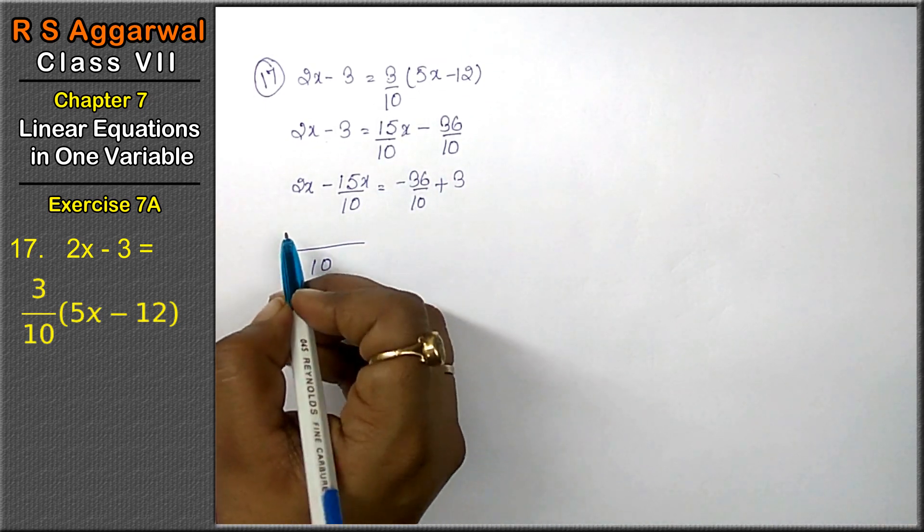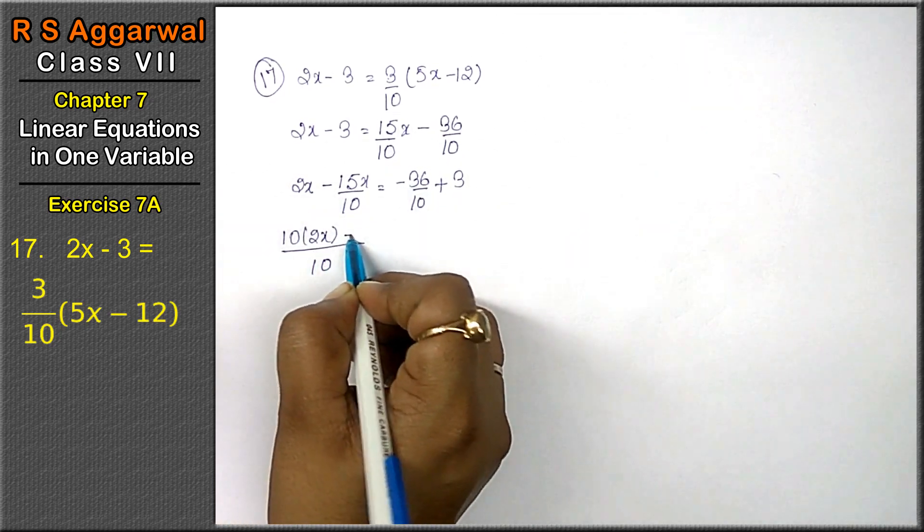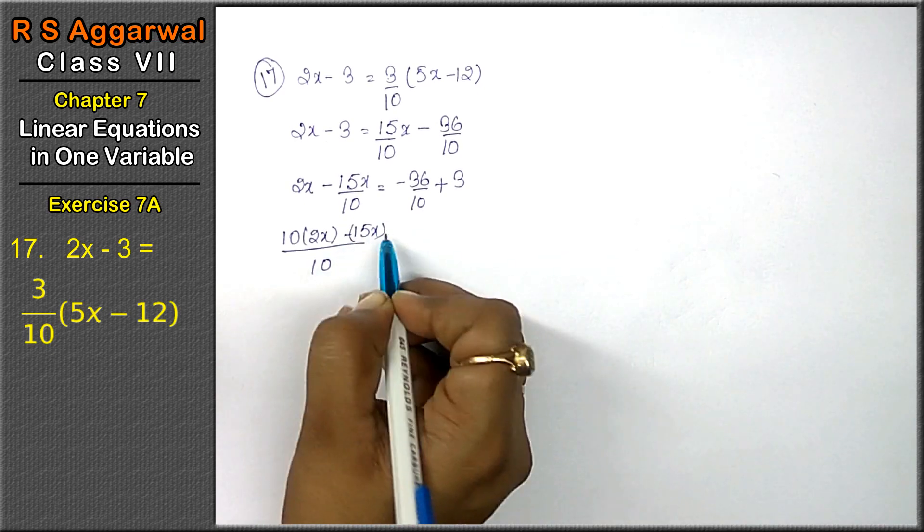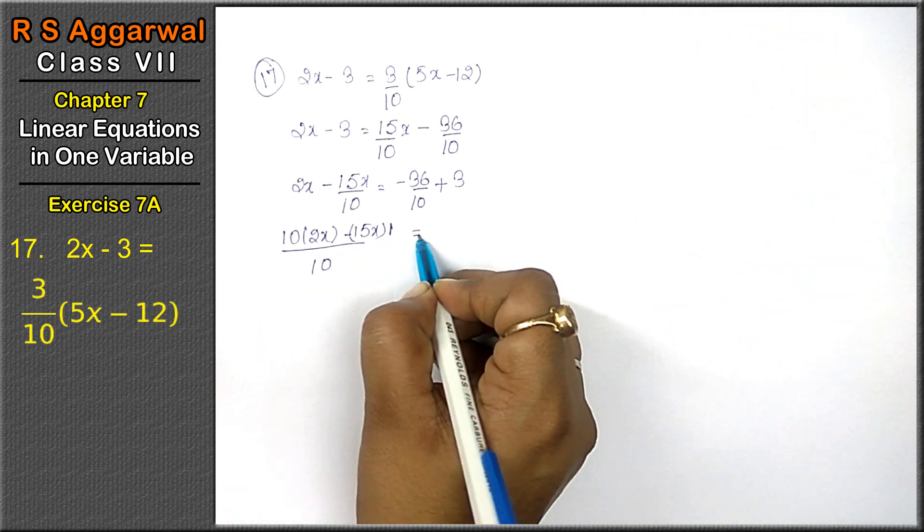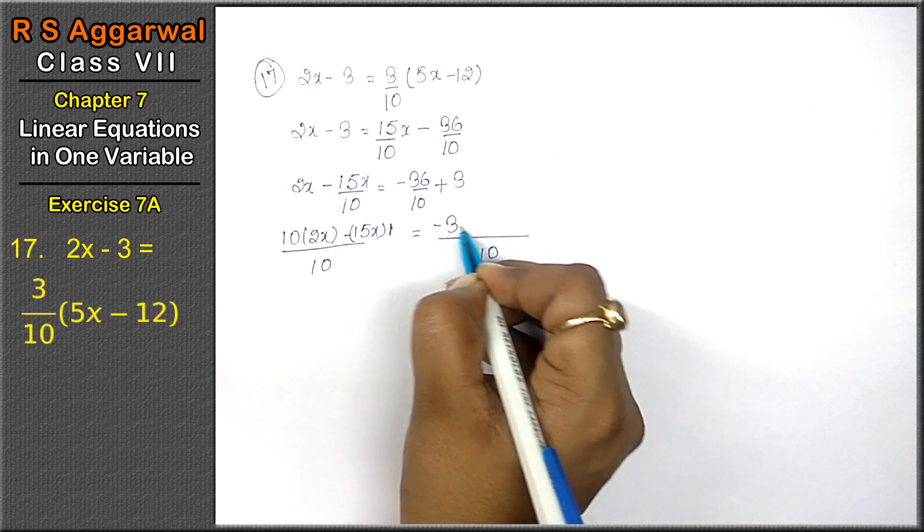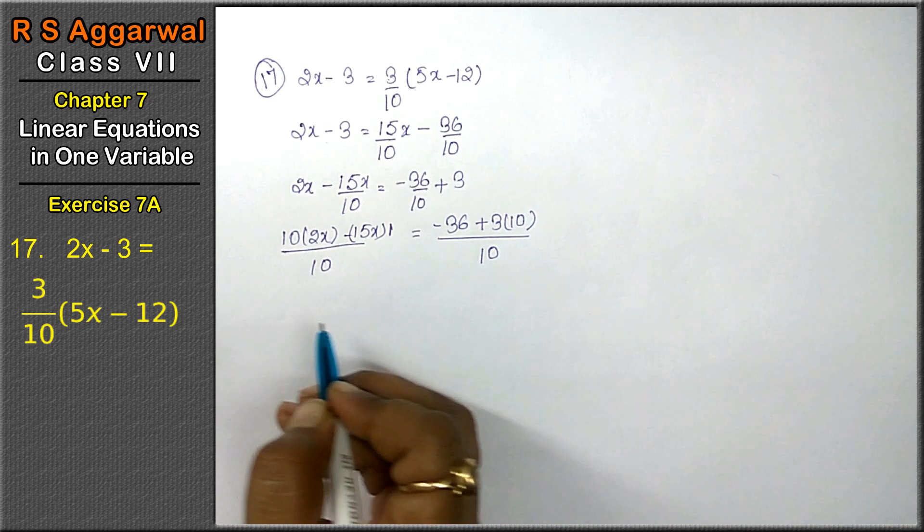10 is the LCM. 10's multiplication with 2x. 10's multiplication with 2x. Minus 15x's multiplication with 1. Equals to minus 36 plus 3 into 10.